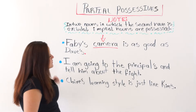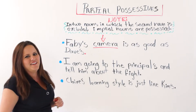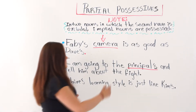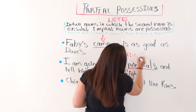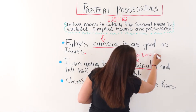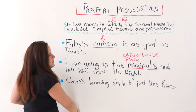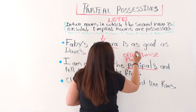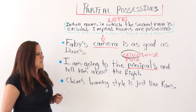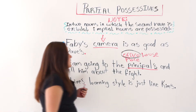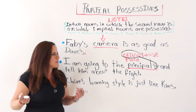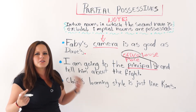The next one says: I am going to the principal's and tell him about the fight. To the principal's what? The implied noun could be 'office.' To the principal's place or house are also possible, but we all know that principals in schools have offices, and it wouldn't make sense to say we're going to the principal's house about a fight. So we are going to use 'office' as the implied noun. Since it is a partial possessive, it is okay not to use the other noun.